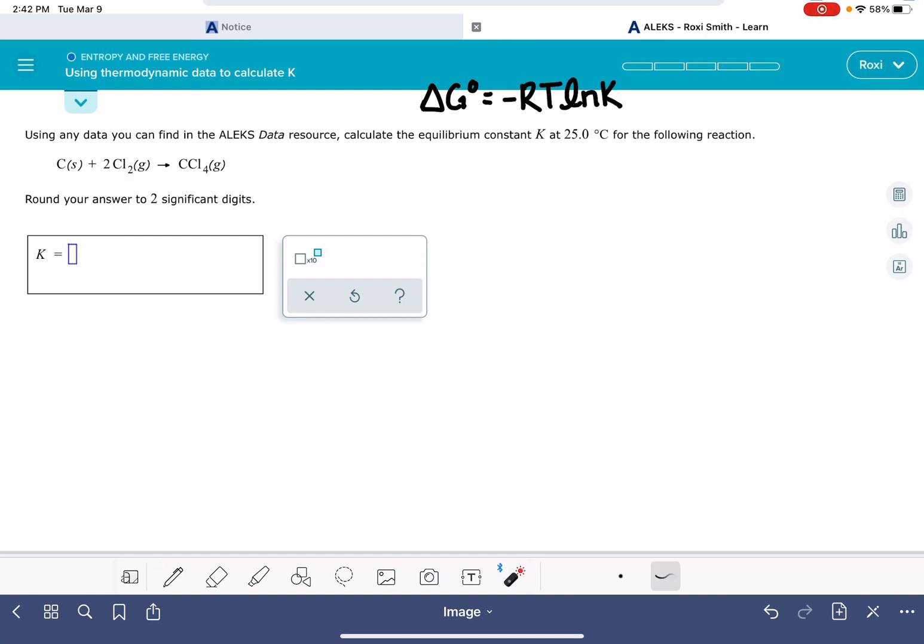The problem is giving us the temperature and the R is a constant. The delta G standard is not given to us in the problem, but there's a hint right here that tells us that we can use data from the Alex data resource, which is this right here, which has all the delta G values in it. So we can use those delta G values and Hess's law to come up with the value of this overall delta G standard for the reaction.